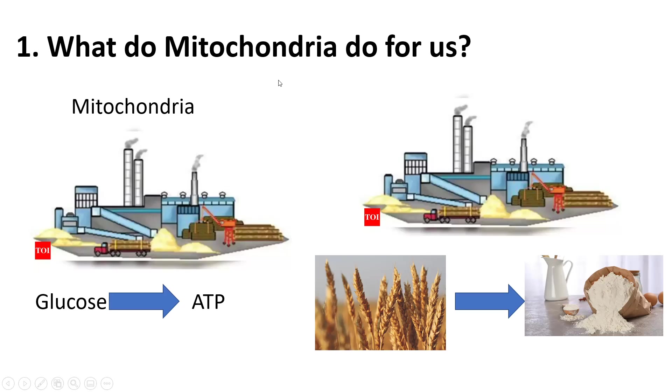Now what do mitochondria do for us? Part of the goal is to get energy by breaking down glucose in order to get ATP as seen over here. ATP is the energy currency of the cell. Think of the mitochondria as the factory that does this.